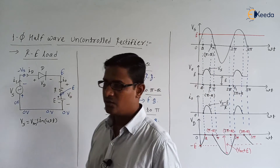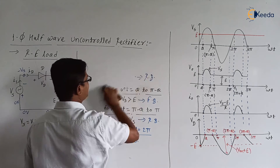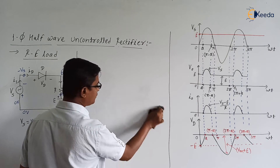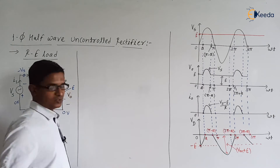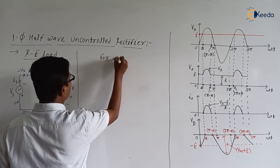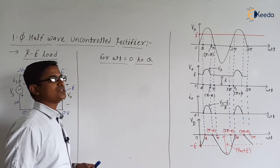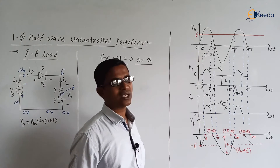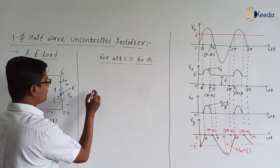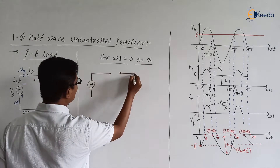Let us now discuss the circuit operation interval by interval. For omega t equal to 0 to theta: Vs is positive but Vs is less than E. So the diode will be in the reverse bias mode — meaning the diode is in the off state.